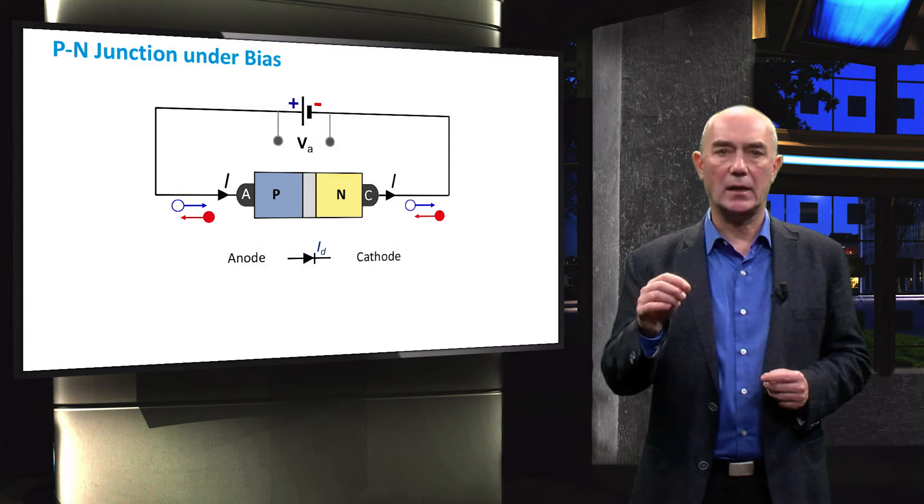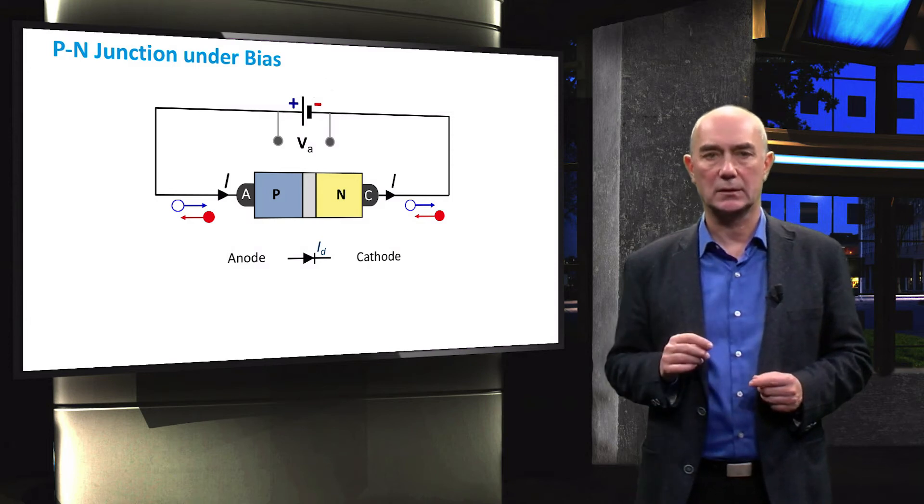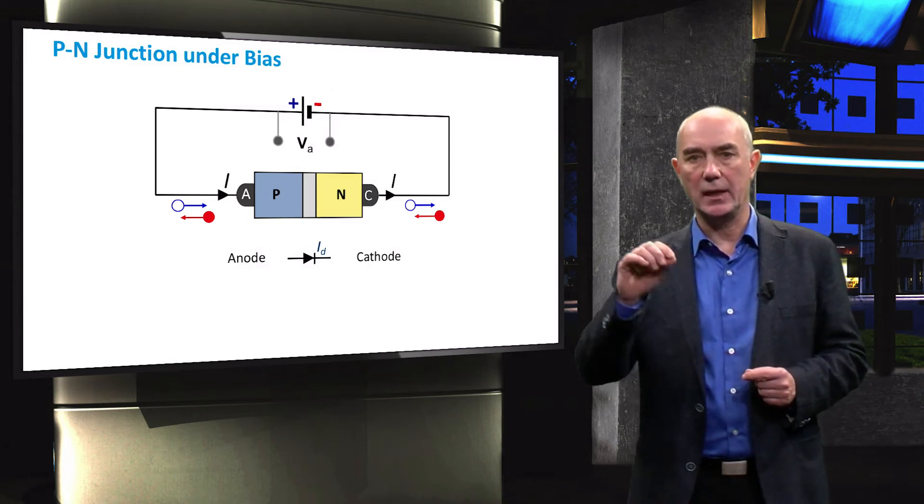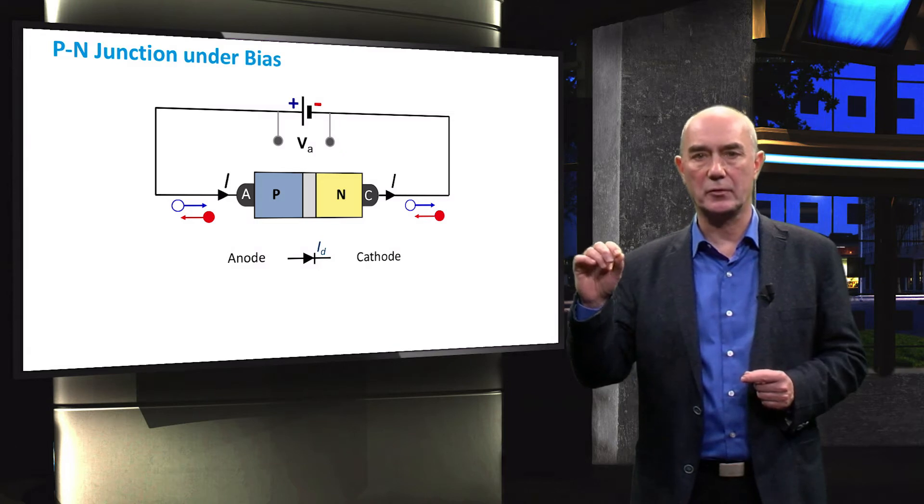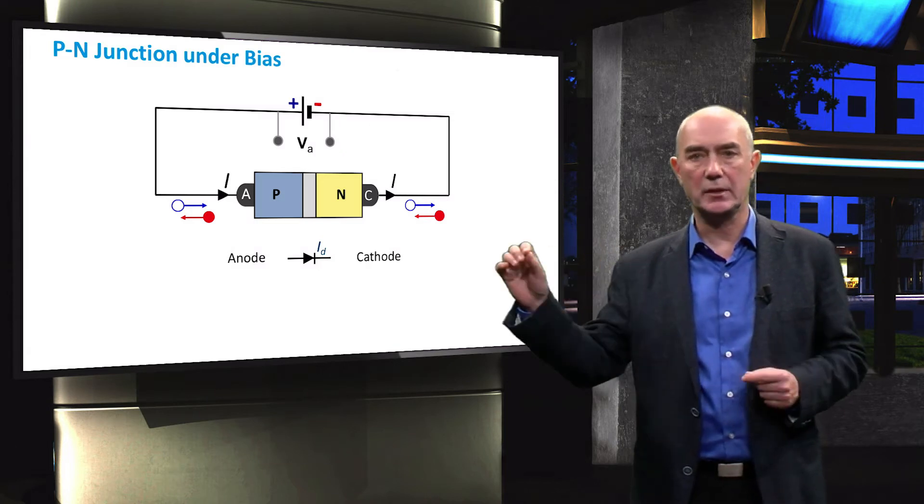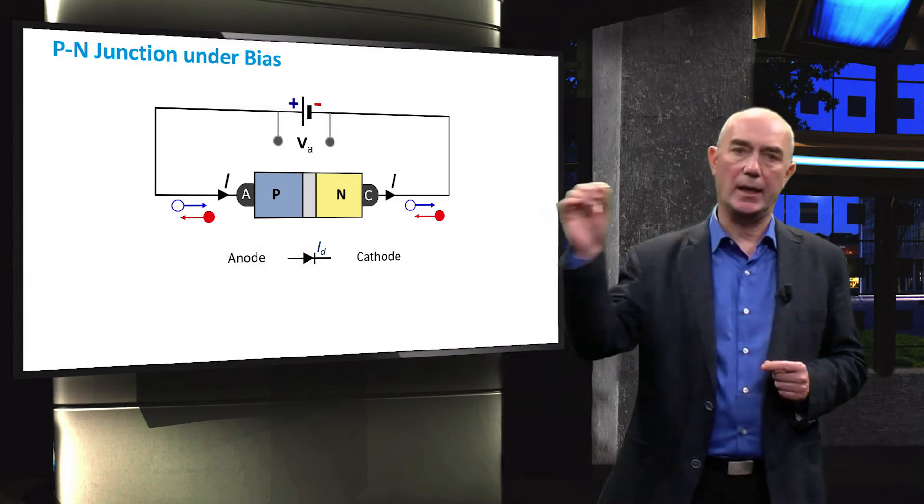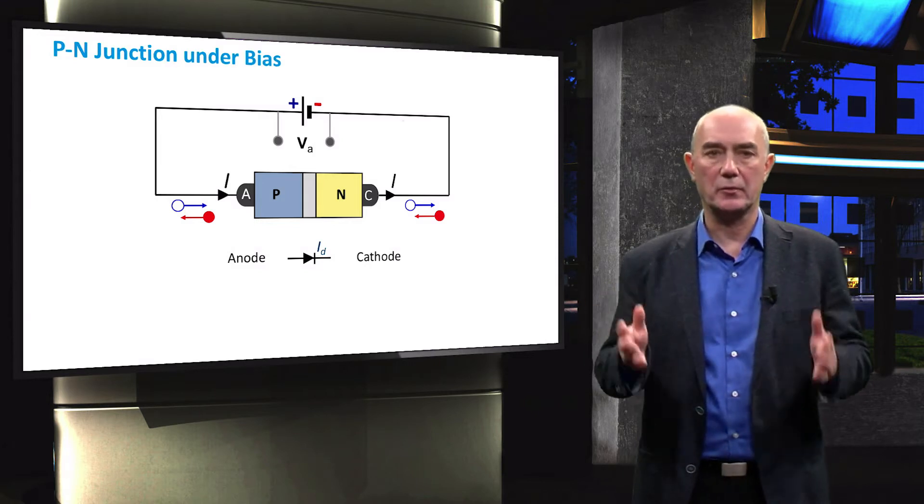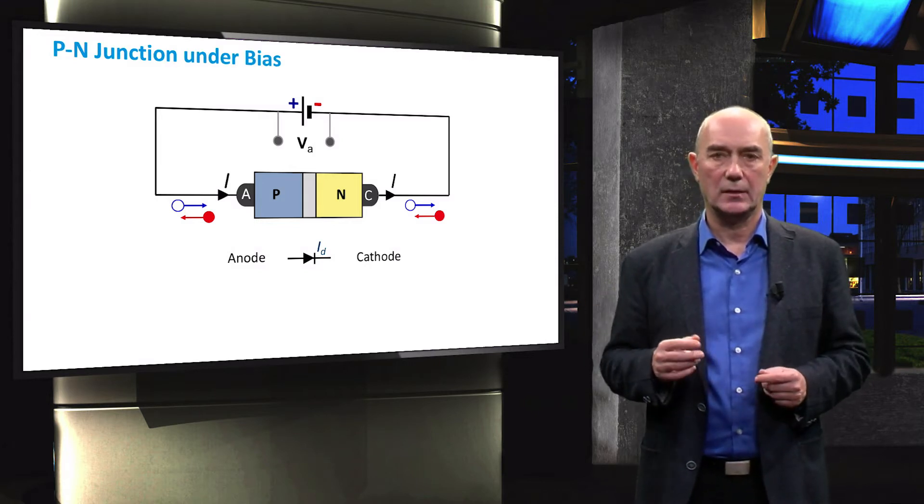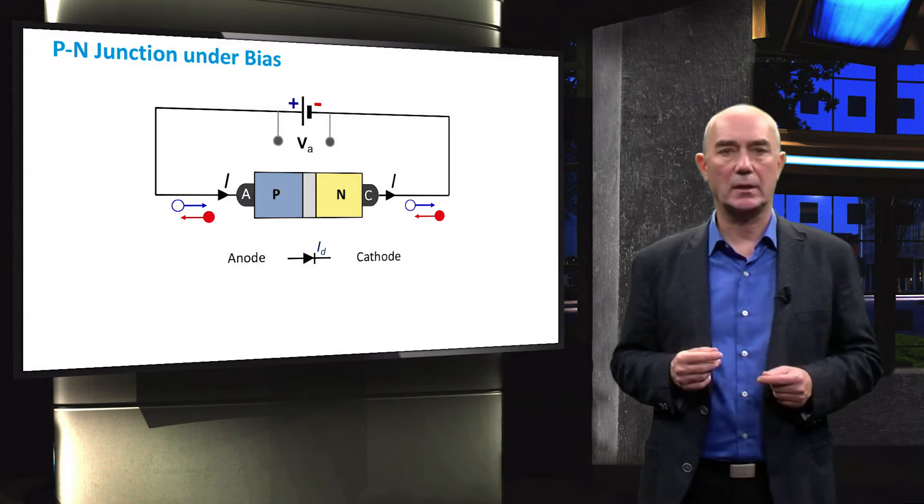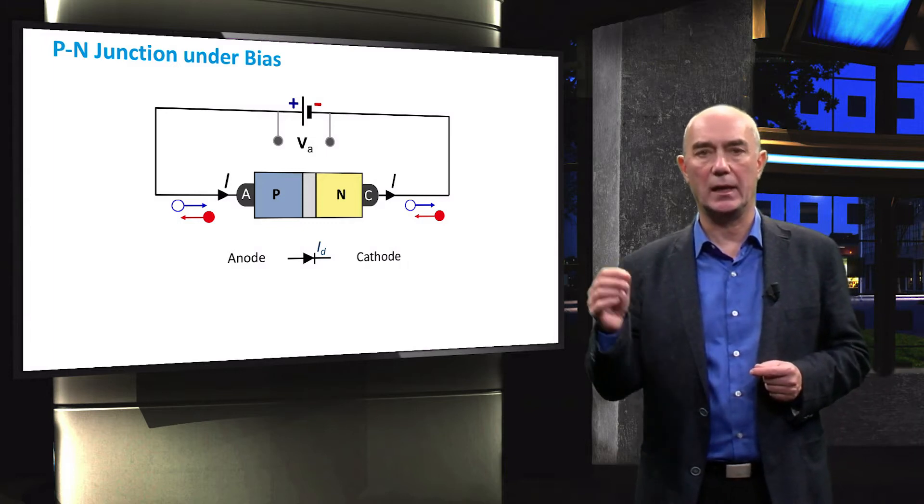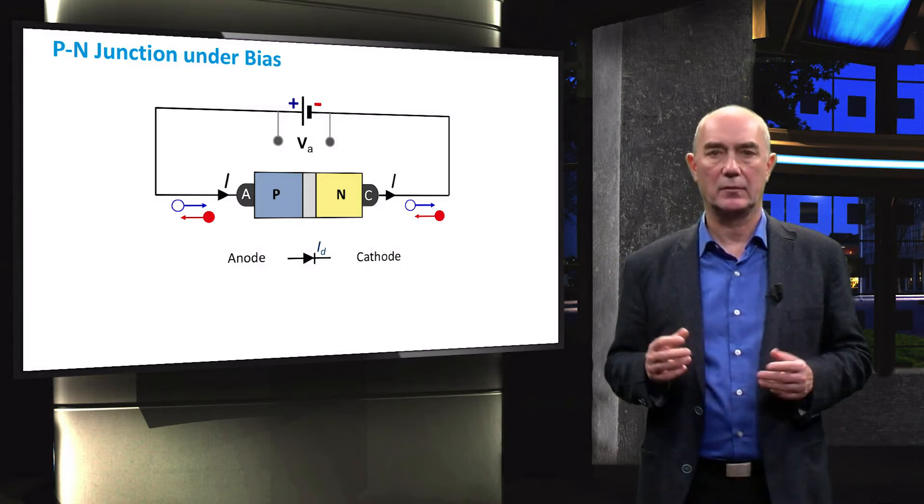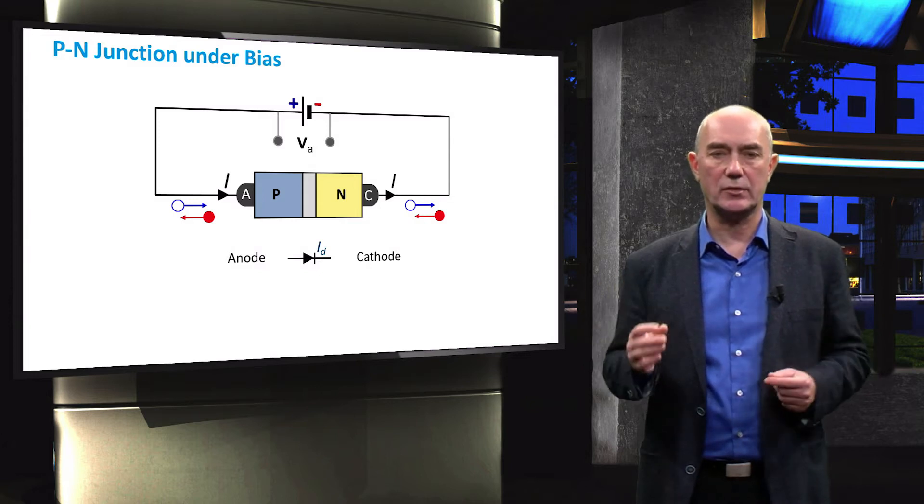A significant current flows through the diode. The current leaves the N-type region of the diode through the cathode into the external circuit and enters the P-type region through the anode. So the question is, how can we determine the value for I, the current, for a given applied voltage Va?